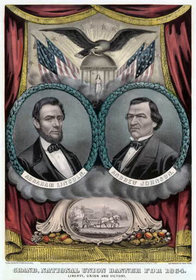In August 1864, Lincoln wrote and signed a pledge that should he lose the election, he would nonetheless defeat the Confederacy by an all-out military effort before turning over the White House: "This morning, as for some days past, it seems exceedingly probable that this administration will not be re-elected. Then it will be my duty to so cooperate with the president-elect, as to save the union between the election and the inauguration, as he will have secured his election on such ground that he cannot possibly save it afterward." Lincoln did not show the pledge to his cabinet, but asked them to sign the sealed envelope.